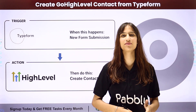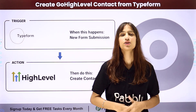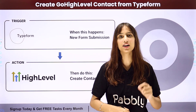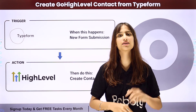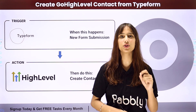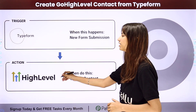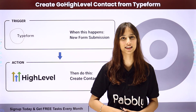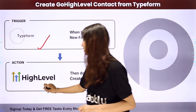Hello everyone, welcome to Pabbly. In today's video we are going to understand how to create a GoHighLevel contact from TypeForm. Here, let's assume I have a travel and tourism business and I've created a contact form using TypeForm. Whenever that form is submitted and I receive a new response, I want to use those details to create a contact in GoHighLevel. To do this I need to build an integration between these two applications using Pabbly Connect — my trigger application will be TypeForm and my action application will be GoHighLevel.